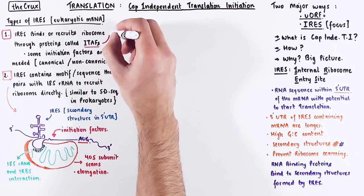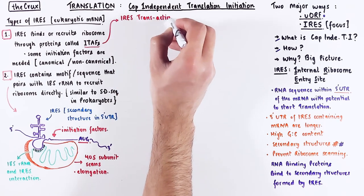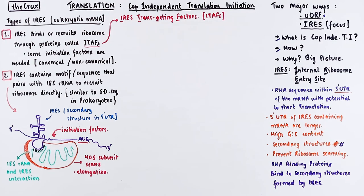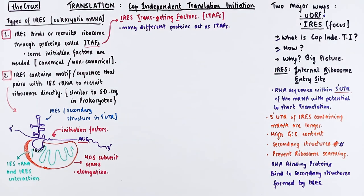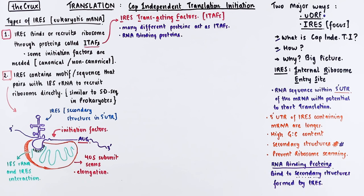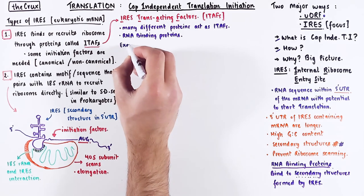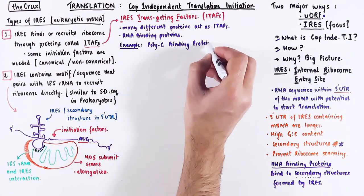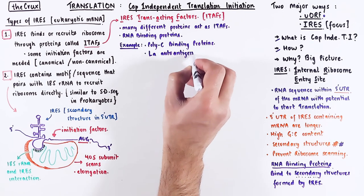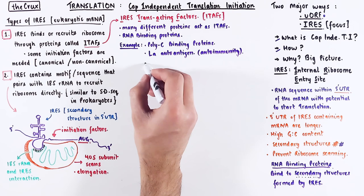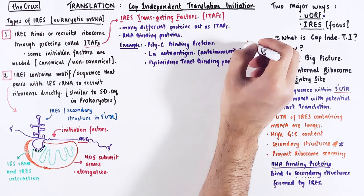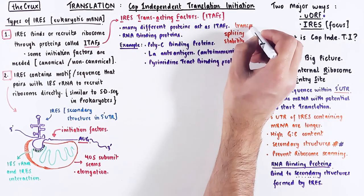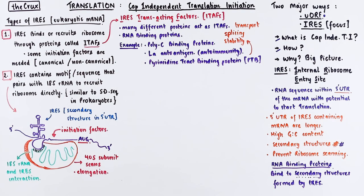The first type of internal ribosome entry site requires ITEFs, which are IRES trans-acting factors. Many different proteins can act as ITEFs — ITEF is not the name of a single protein. These ITEFs are RNA-binding proteins that specifically bind to the secondary structures formed in the ribosome entry site. Some examples include poly-C binding protein, LA-autoantigen (also needed for RNA polymerase III transcription), and pyrimidine tract binding protein, also known as PTB, which is involved in transport, splicing, and stability of mRNAs.